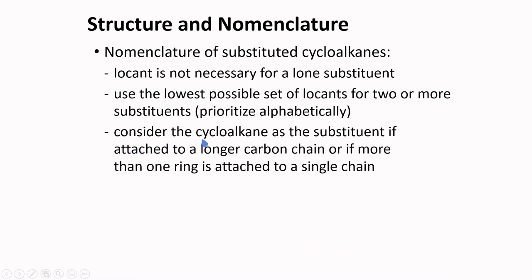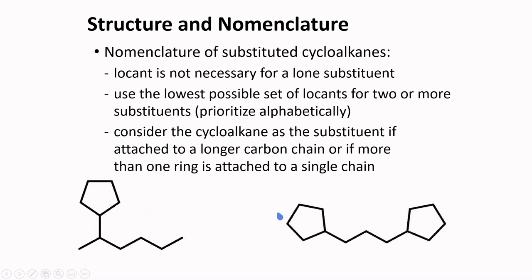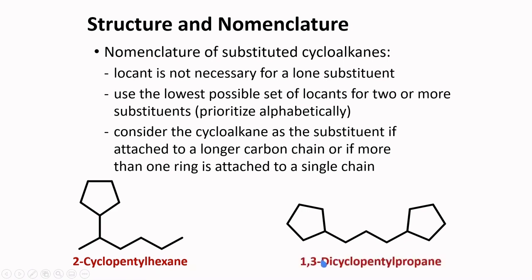Consider the cycloalkane as a substituent if it is attached to a longer carbon chain, or if more than one ring is attached to a single chain. For example, a cyclopentane ring attached to a 6-carbon chain is named 2-cyclopentylhexane. A compound with two cyclopentane rings on a propane chain is named 1,3-dicyclopentylpropane.